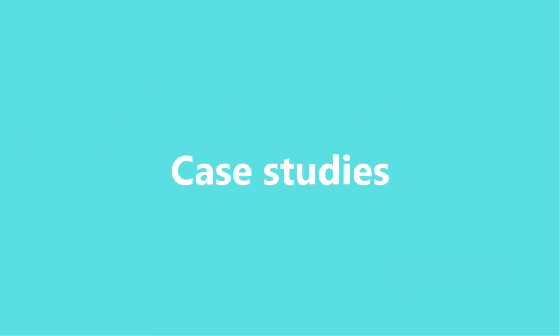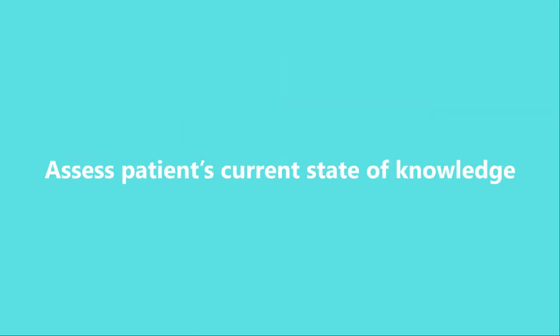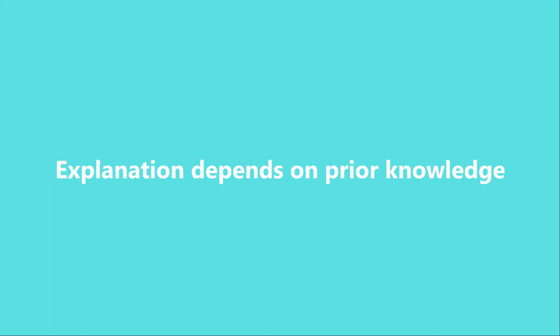Let's go through three different cases to help you get a better understanding. Here's the instruction for case 1: Mr. Smith, age 60, needs to go for a sigmoidoscopy — please explain the procedure. It's important to start by introducing yourself and confirming you have the right patient, then proceed by explaining the reason for the consultation. Use open questions to assess the patient's current state of knowledge: 'What do you know about sigmoidoscopy, Mr. Smith?' The explanation you give depends on Mr. Smith's prior knowledge.